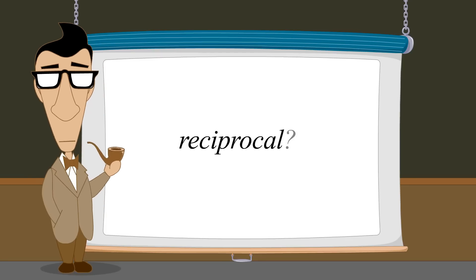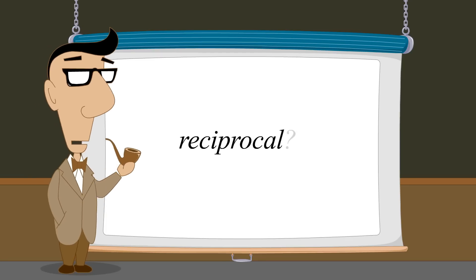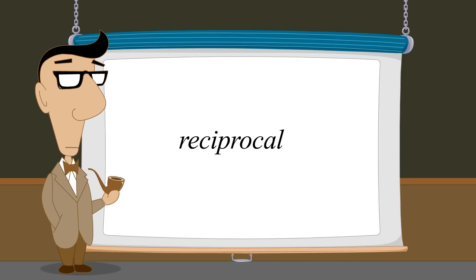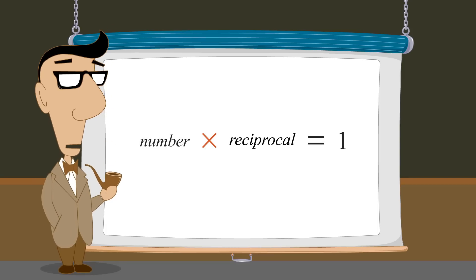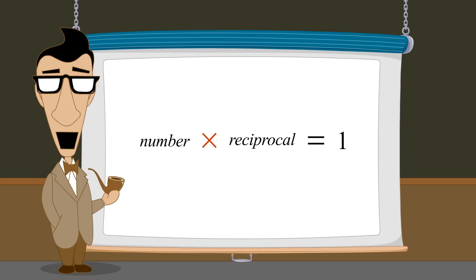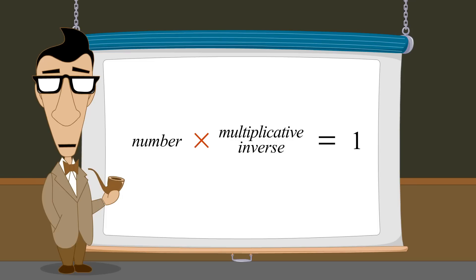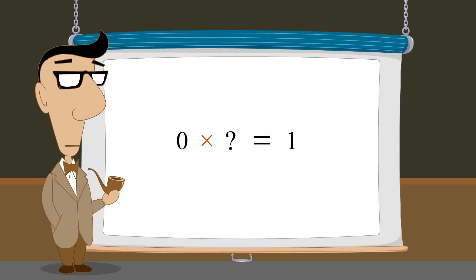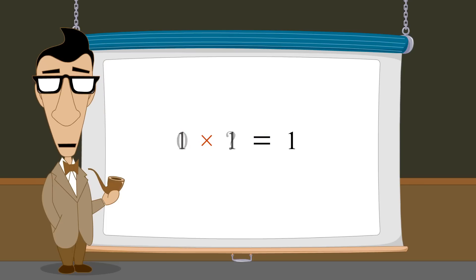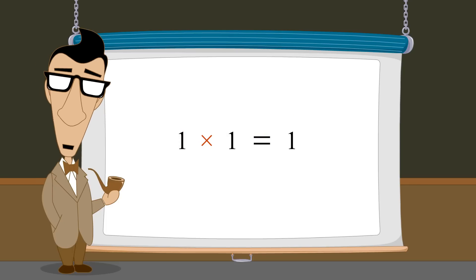So what is a reciprocal? Every number except zero has a reciprocal. A number's reciprocal is the number that you must multiply it by to get one. For this reason, a number's reciprocal is also called its multiplicative inverse. The number zero does not have a reciprocal since there is no number which we can multiply it by to get one. And the number one is its own reciprocal.